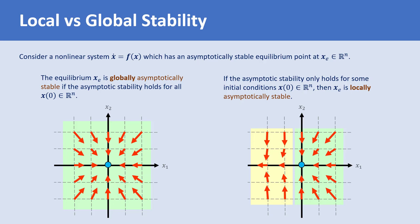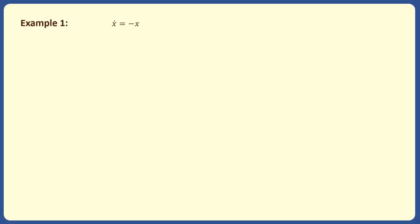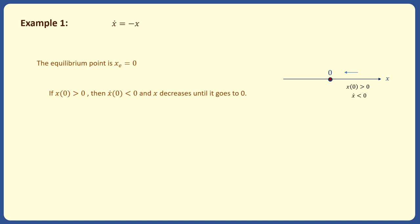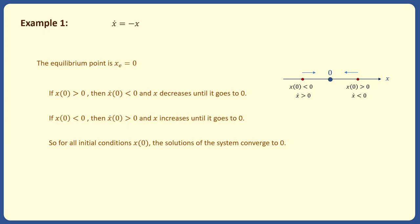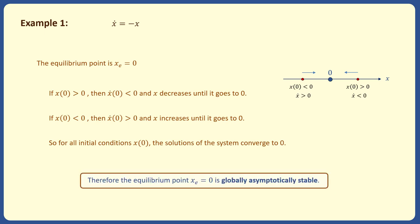We will now study two simple examples to better understand local and global asymptotic stability. The linear system x_dot = -x has an equilibrium point at the origin. If the initial condition is at the origin, the trajectory remains there for all time. If the initial condition is positive, then x_dot is less than 0 and x decreases until it goes to 0, stopping at the origin where x_dot = 0. If the initial condition is negative, then x_dot is positive and x increases and converges to 0. So for all initial conditions in R, the trajectory tends to the origin, and therefore the origin is globally asymptotically stable.